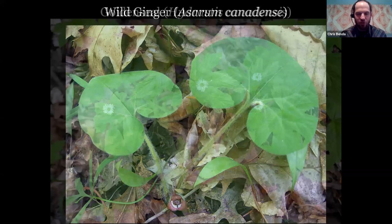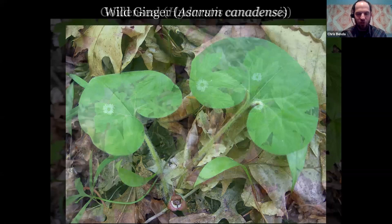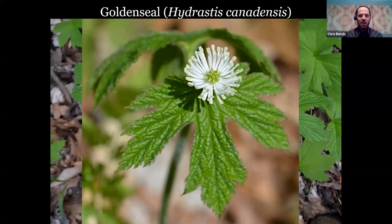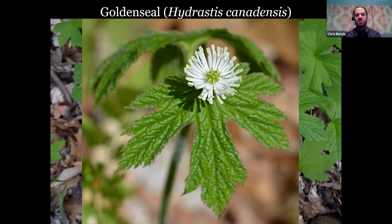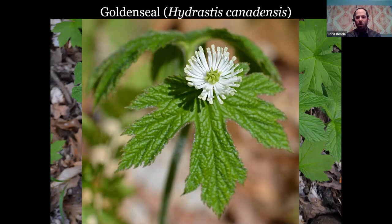Wild ginger is not related to our culinary ginger at all — totally different plants, different families. Goldenseal was once over-collected because of disputed medicinal properties, but it has made a tremendous comeback in Illinois. Here in the southern part of the state, it's tracked by the national forest, so when I do surveys I have to document where they occur. When they bloom, they have really strange-looking flowers: there are no petals, just a whorl of stamens and the styles in the middle. Like trout lily, if it's too young there'll be a single leaf on a single stem; when reproductively mature, they'll have two leaves and then bloom.